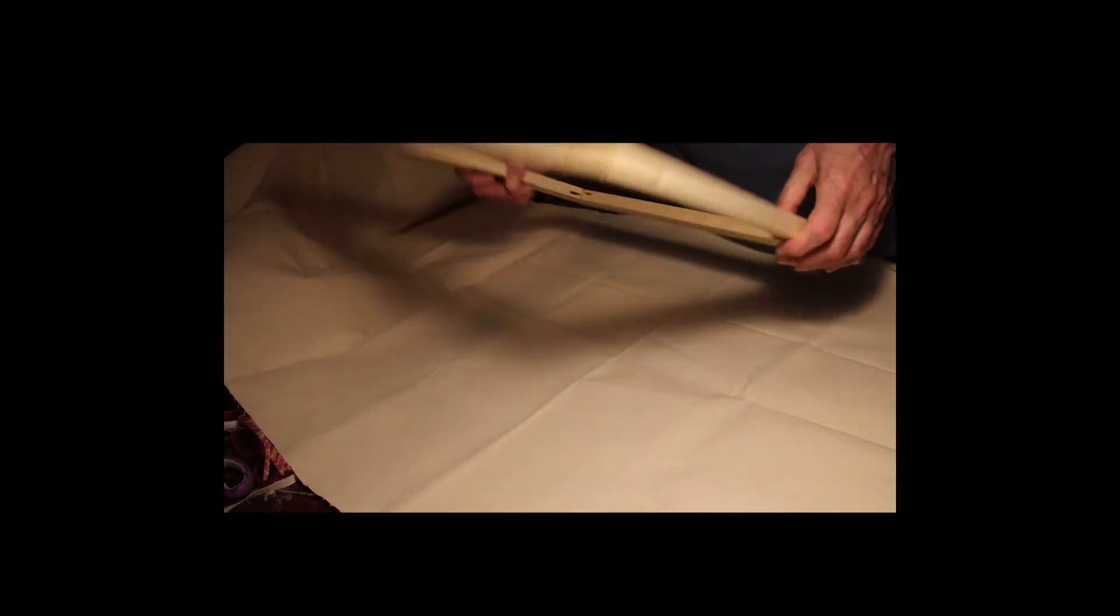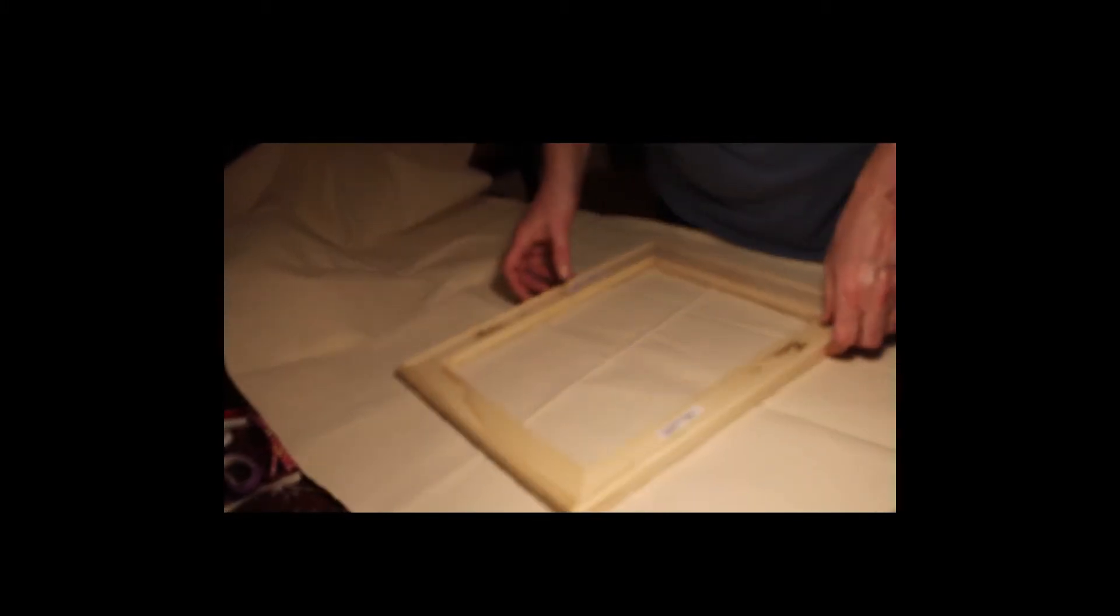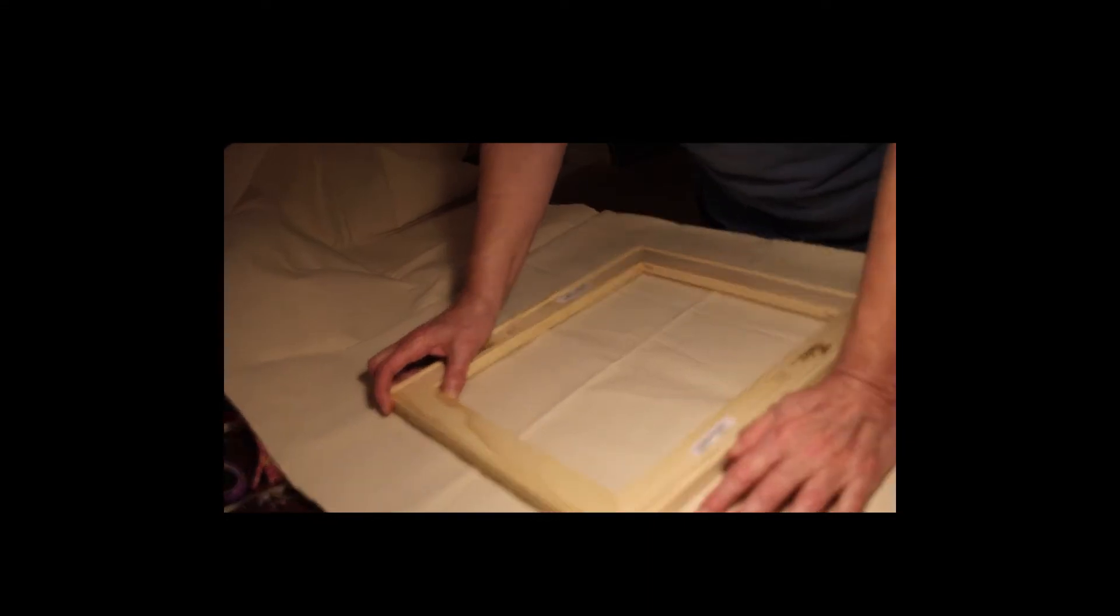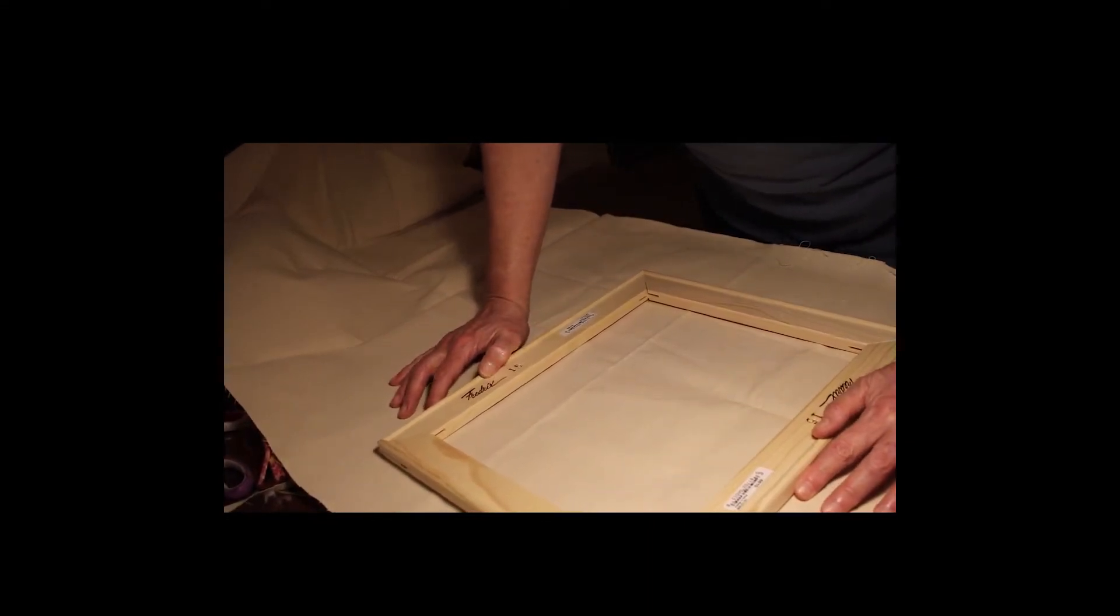You can get these little wood slits wherever you buy the stretcher bars. You can get little wood slits that you can tap into these slots here, and that'll stop the buckling. It's usually the buckling in corners that happens, but if you stretch it correctly, you're okay.